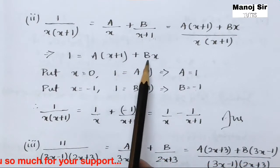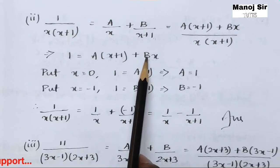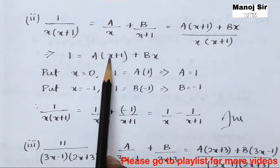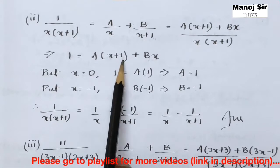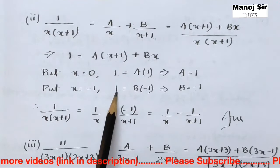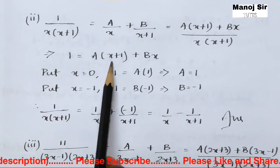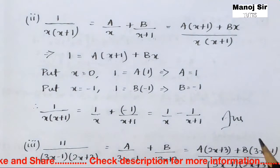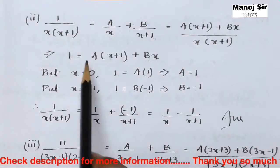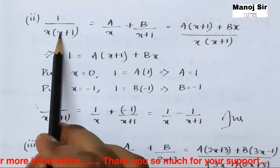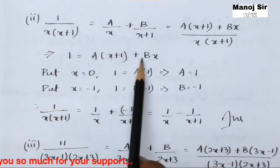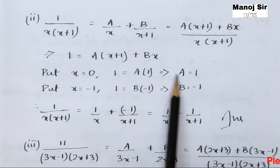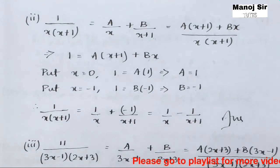To find B, put x = −1 so that the A(x+1) term vanishes. Then 1 = B(−1), giving B = −1. Therefore: 1/(x(x+1)) = 1/x − 1/(x+1). This is the final answer for Example 2.